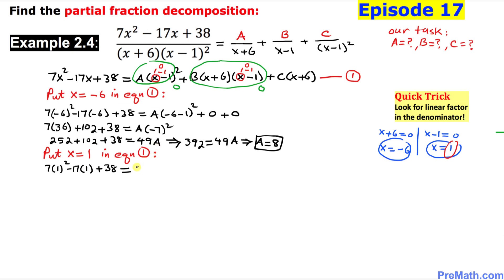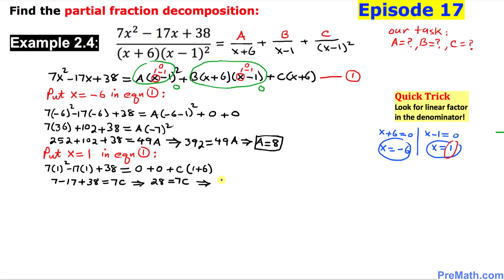So we get zero plus zero plus C times 1 plus 6, which is 7C. On the left-hand side, 7 times 1 squared minus 17 times 1 plus 38 simplifies to 7 minus 17 plus 38, giving us 28. So 28 equals 7C, which means C equals 4.